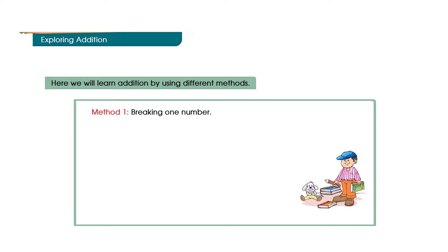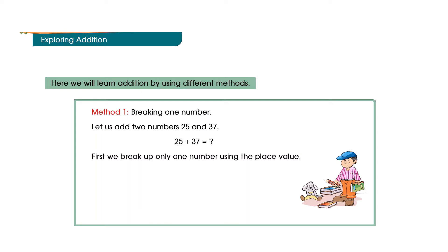Method 1: Breaking 1 Number. Let us add two numbers, 25 and 37. 25 plus 37 is equal to how much? First, we break up only one number using the place value. 25 plus 37 becomes 25 plus 30 plus 7. 25 plus 30 is equal to 55. 55 plus 7 is equal to 62.